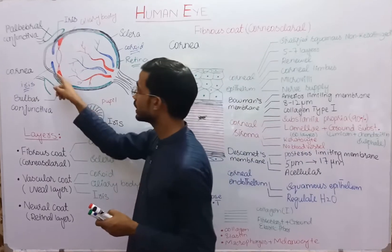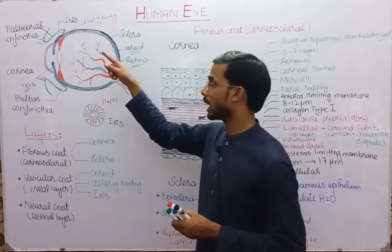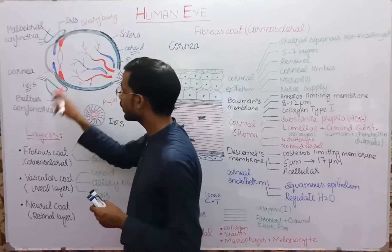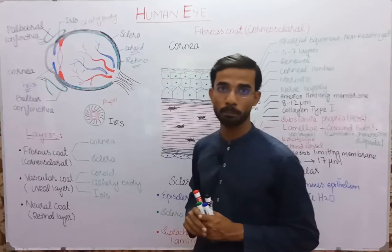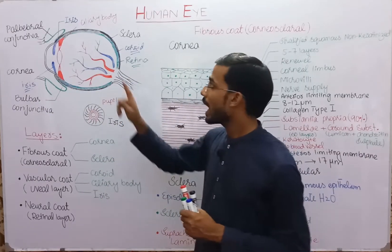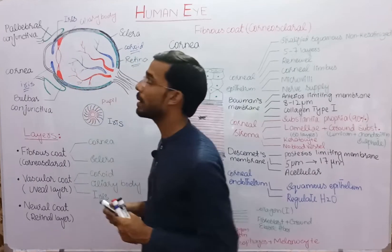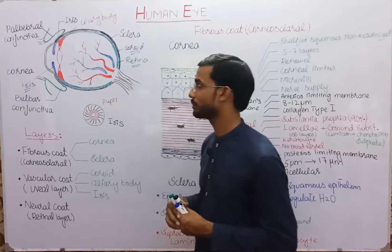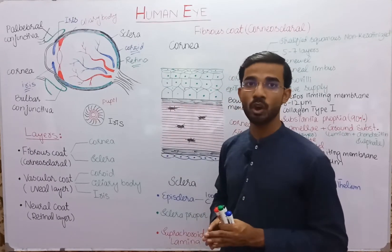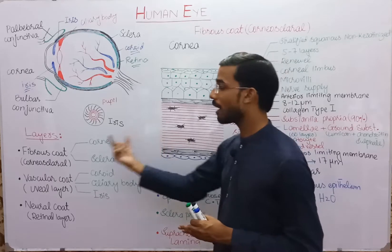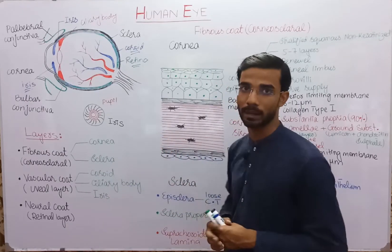There is a depression above and below the eye; the innerward depression is the palpebral conjunctiva, which is present above and below the eye. In this video, we will focus on the fibrous cord, which has two components: cornea and sclera.